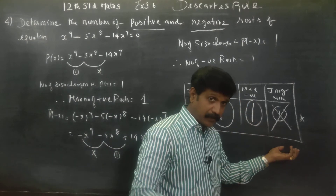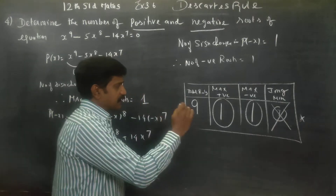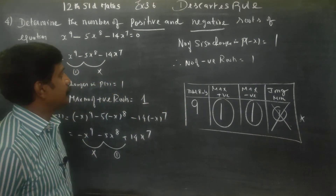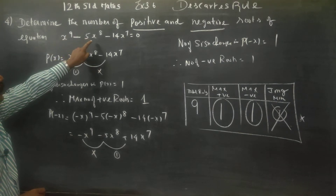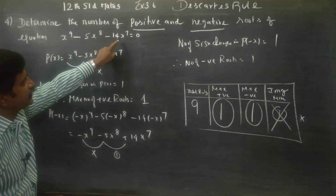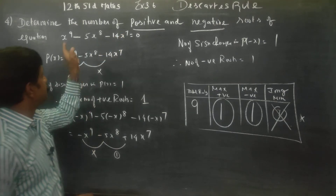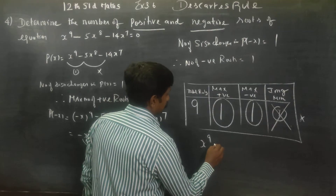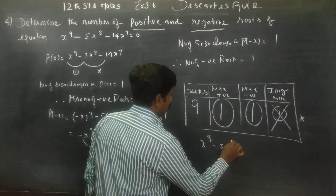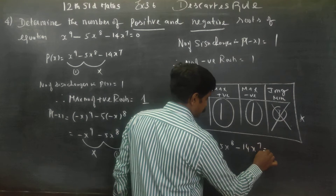Here is a simple example for you. Consider x power 9 minus 5x power 8 minus 14x power 7 is equal to 0.